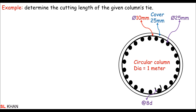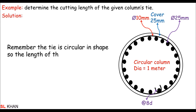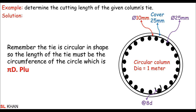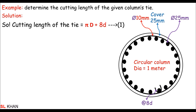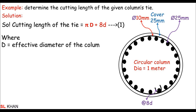Now moving to the solution: remember the tie is circular in shape, so its length must be the circumference or perimeter of the circle, which is πD, plus the hook length. So the total cutting length of the tie is πD + 8d, where D is the effective diameter of the column measured center-to-center of the tie, and d is the diameter of the tie used for the hook.